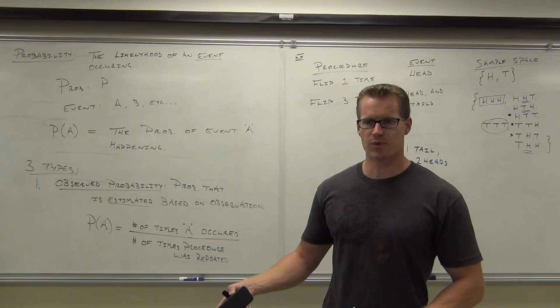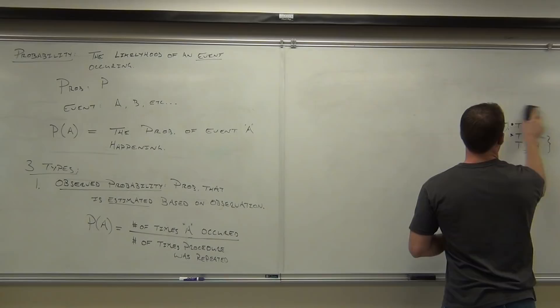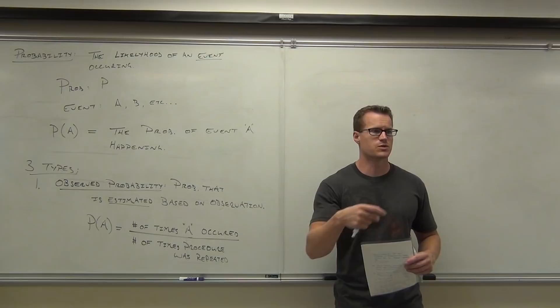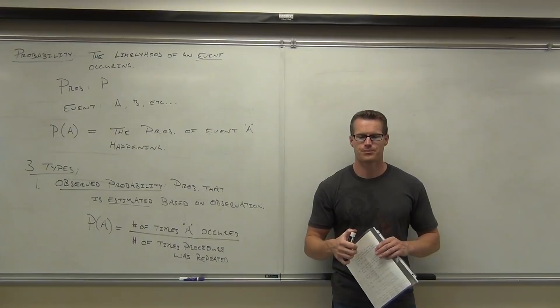I'll give you all three types and then some examples so we can calculate them. The first one — observed — is you're actually doing something: going out there and flipping the coin, taking a poll, or observing what someone is doing, and basing your probability on that.